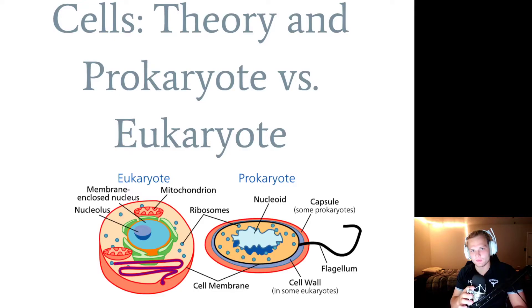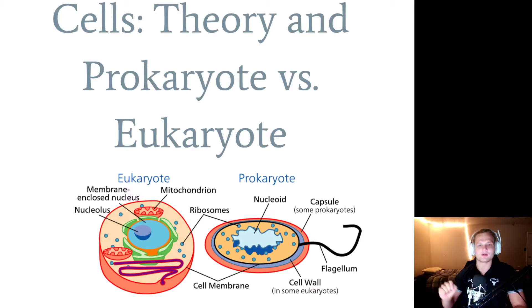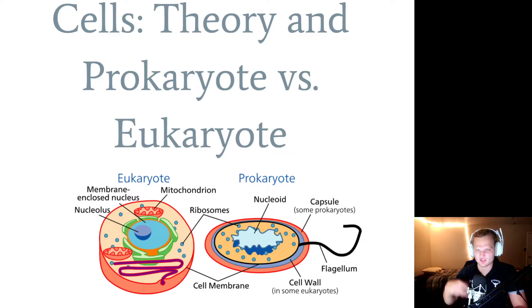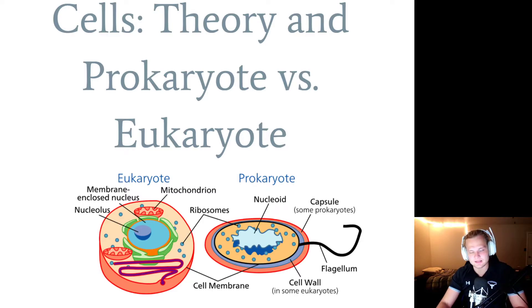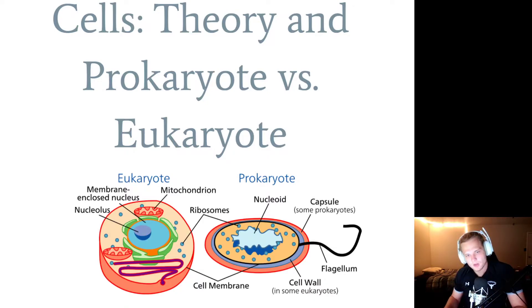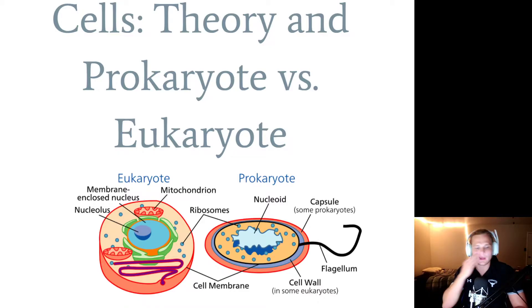Hey everybody, it's Mr. Eisenstein and we have cells coming up. We just finished taxonomy and now we're headed into cells. Specifically today we're learning about cell theory, prokaryotes, and eukaryotes. So this is just our introduction to cells, some of the most important vocabulary, and a sneak peek at the new things we're going to be diving into. A few of these words are going to be familiar — prokaryote means no nucleus, eukaryote has a nucleus. Let's get going.